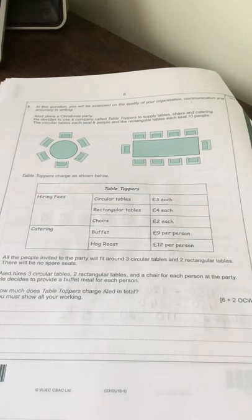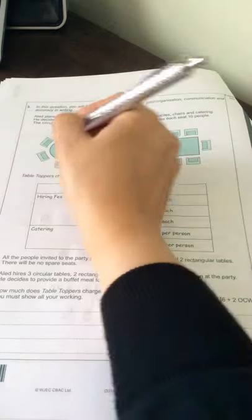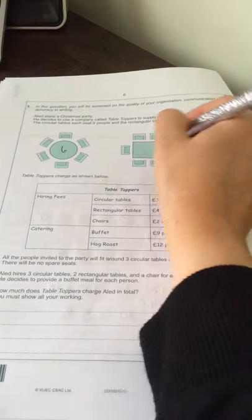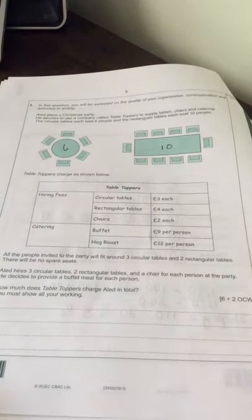Question 3. In this question, you will be assessed on the quality of your organisation, communication and accuracy in writing. Alid plans a Christmas party and he decides to use a company called Table Toppers to supply the tables, chairs and catering. The circular tables each sit six people and the rectangular tables each sit ten. So this one will sit six, as we can see six chairs, and that one will sit ten, ten chairs.